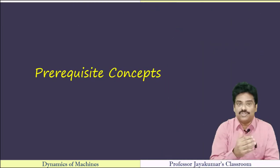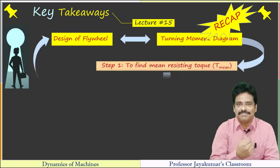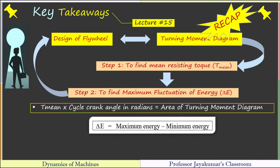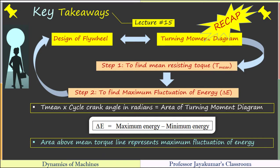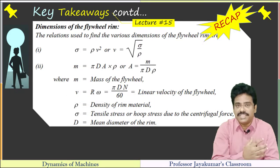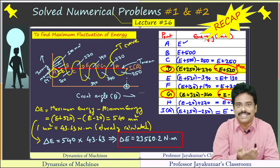Before proceeding to the problem, let us do a quick recap of all the prerequisite concepts required to solve this problem. We know that whenever a turning moment diagram is given, we use it to find the mean resisting torque value and thereby the maximum fluctuation of energy delta E. This is the formula to find delta E — maximum energy minus minimum energy. In some cases, the area above the T_mean line is given, which will represent delta E. This is the relation used to find the energy stored in a flywheel. In some scenarios, we need to find the dimensions of the flywheel rim, which can be determined using these expressions.